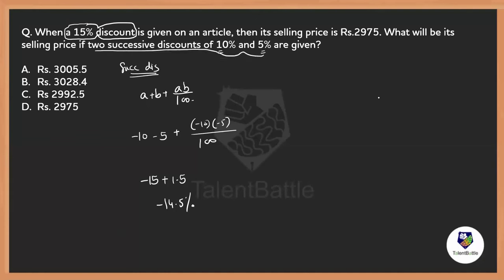If it is a single discount it gives 15%, but if it is a successive discount it is less than that — 14.5%. When the discount is less, the selling price will be more than the previous price. The previous selling price was 2975, so the new price should be more than 2975. Since the successive discount of 14.5% is very close to 15%, the new price should be very closely higher than 2975, which points to option C — 2992.